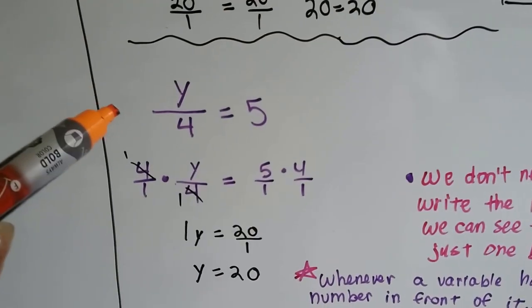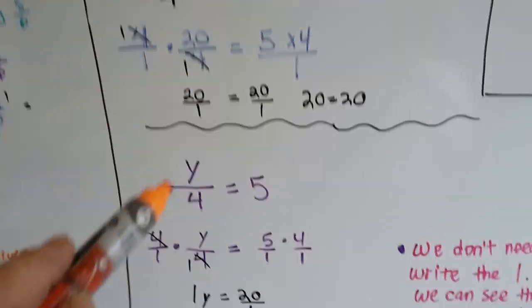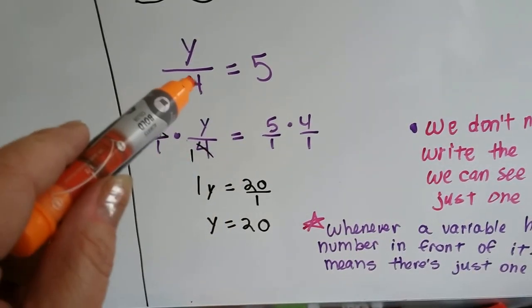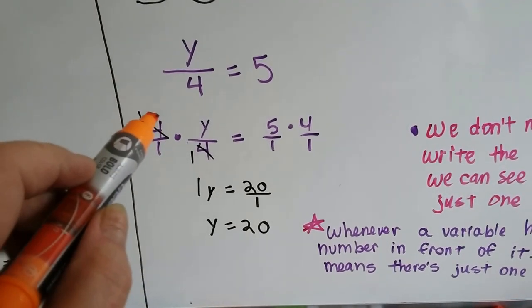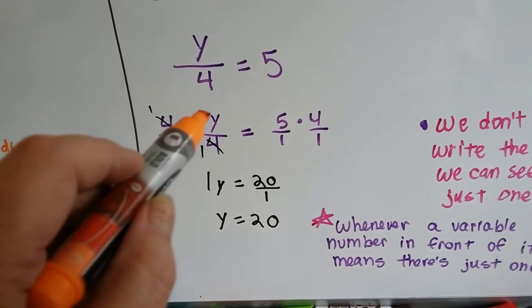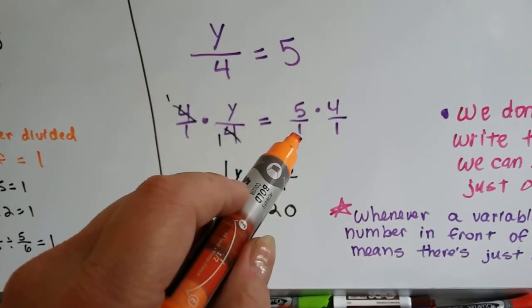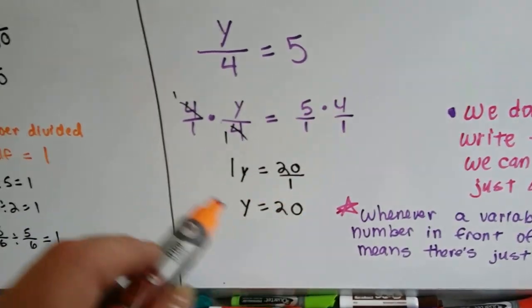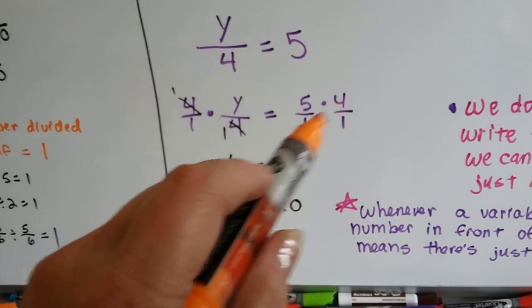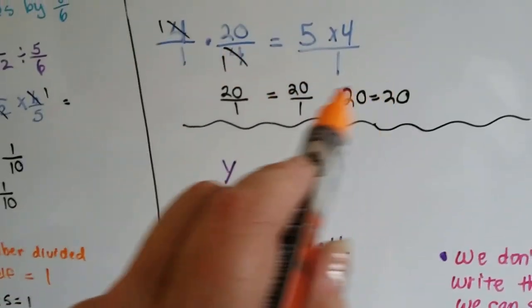So this is what it would look like with variables if it was a variable over 4 equals 5. We would multiply this side and this side of the equal sign times 4. And to do that, we put the 4 over a 1 as a whole number. So we're going to multiply 4/1 times y/4. And that's going to equal 5/1 because we're turning this into a fraction. We do it by writing 5 over 1 to make it an improper fraction times 4 over 1. Well, this 4 cancels out that 4 so we end up with 1y over 1 is equal to 20 over 1, which is 1y is equal to 20 over 1 or y is equal to 20. So it would be just like here.